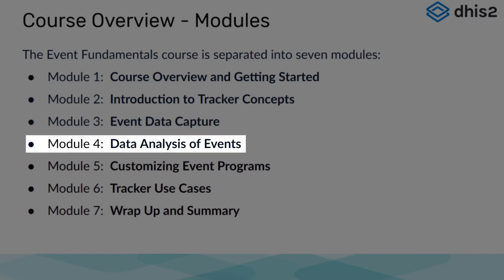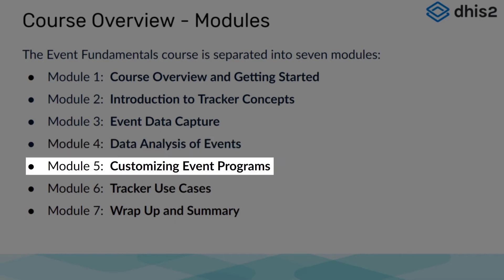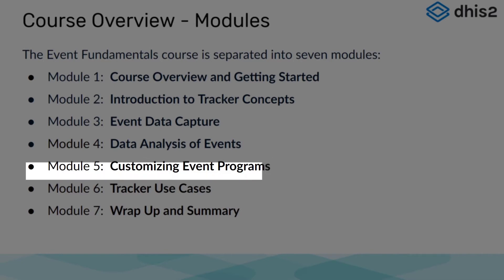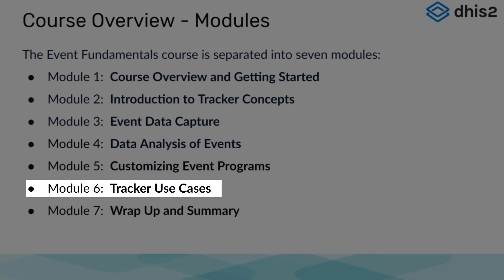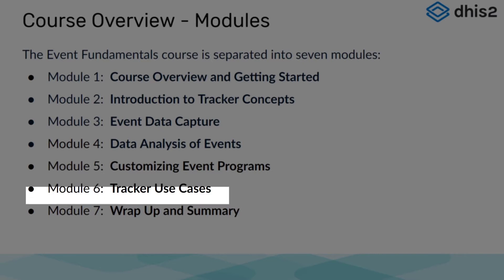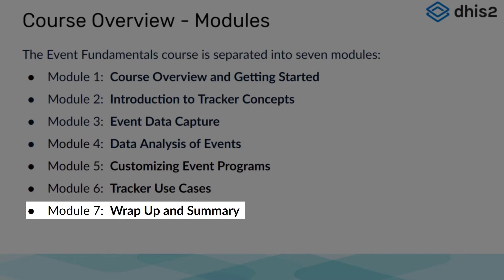Module 4 looks at the data analysis of event programs, focusing on creating a variety of outputs using the inbuilt tools provided within DHIS2. Module 5 reviews the configuration of event programs, allowing you to actually create your own event program by the end of this module. In Module 6, we will briefly introduce tracker use cases — again, a brief introduction as this is not the focus of this course. Lastly, in Module 7, we will wrap up the course and discuss next steps.